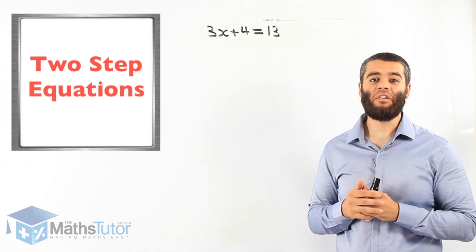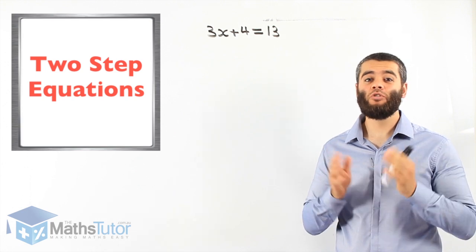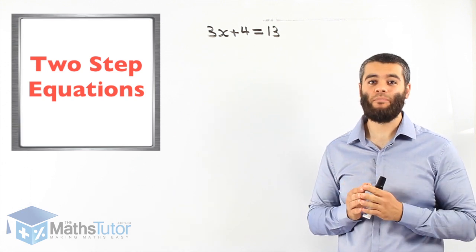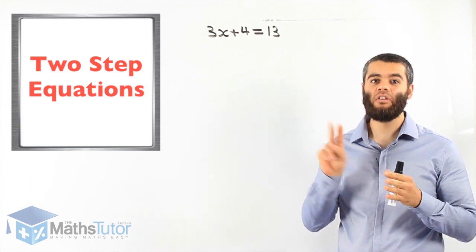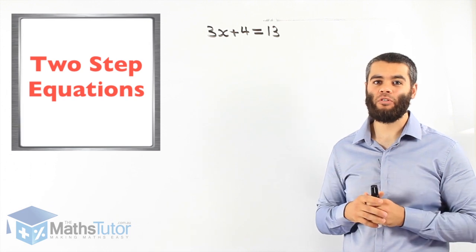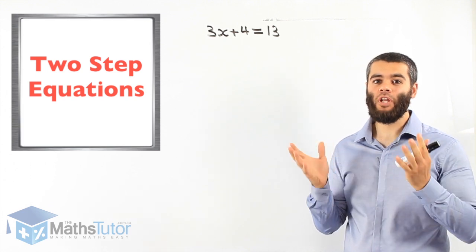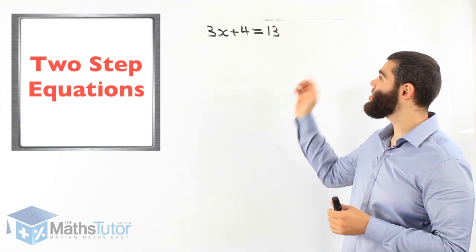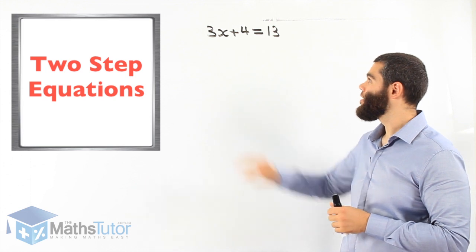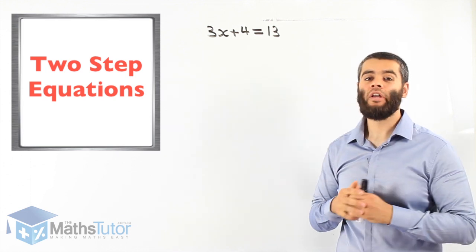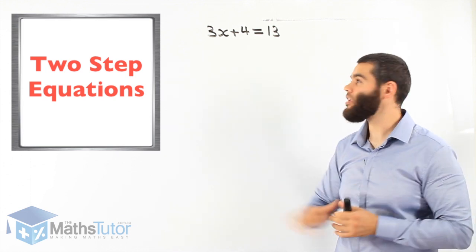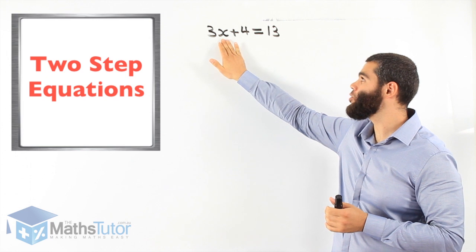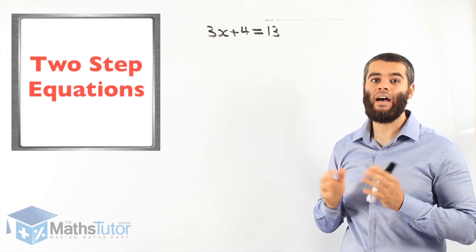Okay guys, we're now going to learn about two-step equations. Two-step meaning they have two steps. We know the equations — we're trying to find the missing pronumeral. In this example we have 3x plus 4 equals 13. We would like to find the missing pronumeral, in this case x.